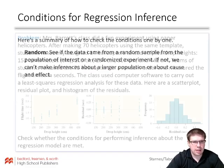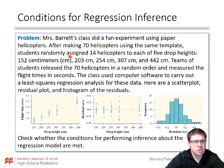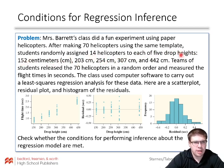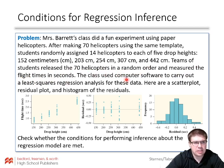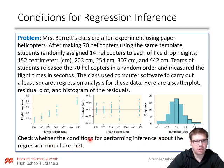Example problem: Mrs. Barrett's class did a fun experiment using paper helicopters. After making 70 helicopters using the same template, students randomly assigned 14 helicopters to each of five drop heights: 152 centimeters, 203, 254, and so on. Teams of students released the 70 helicopters in a random order and measured the flight times in seconds. The class used computer software to carry out a least squares regression analysis for these data. Here are the scatter plot, residual plot, and histogram of residuals — we want to check whether the conditions for performing inference about the regression model are met.